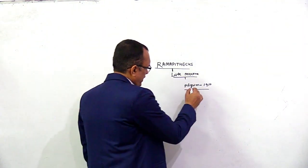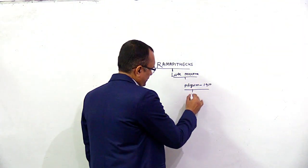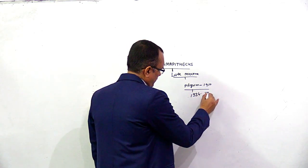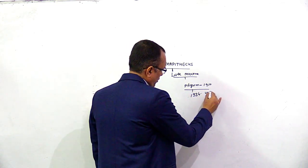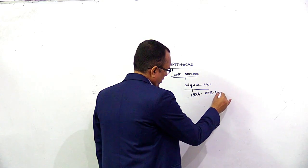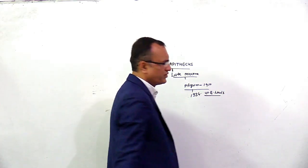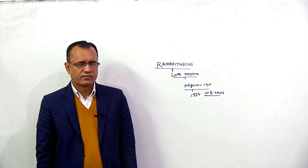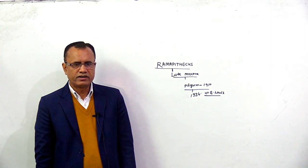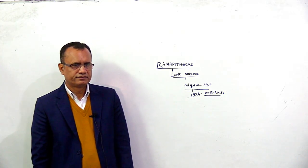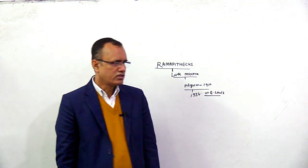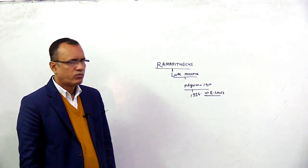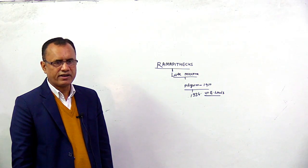After that, in 1934, G. Lewis had discovered fossils of Ramapithecus from the Shivalik region of India.